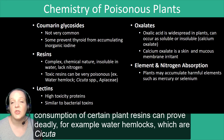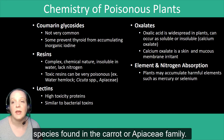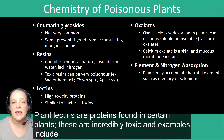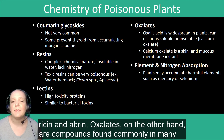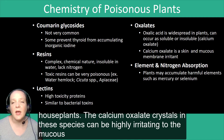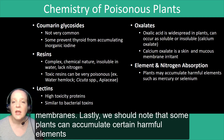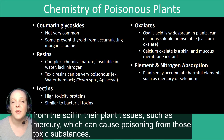For example, water hemlocks, which are Cicuta species found in the carrot or Apiaceae family. Plant lectins are proteins found in certain plants and can be incredibly toxic — examples include ricin and abrin. Oxalates are compounds found commonly in many houseplants, and the calcium oxalate crystals in these species can be highly irritating to the mucous membranes. Lastly, some plants can accumulate harmful elements from the soil into their plant tissues, such as mercury, which can cause poisoning from those toxic substances.